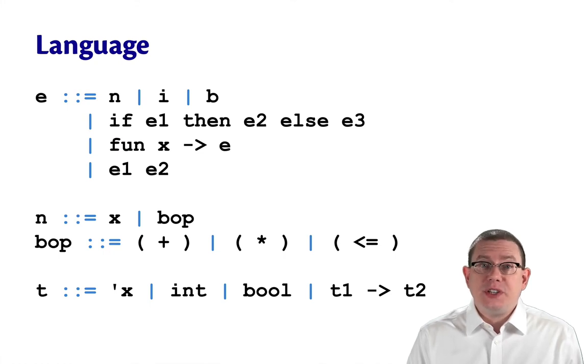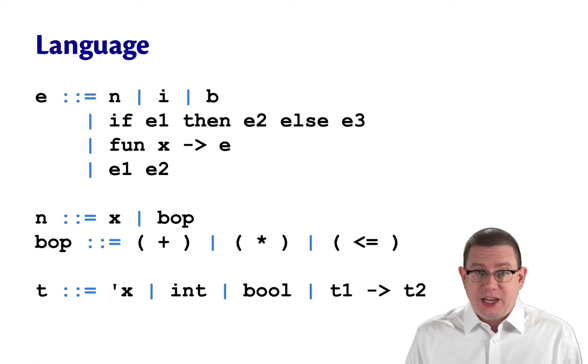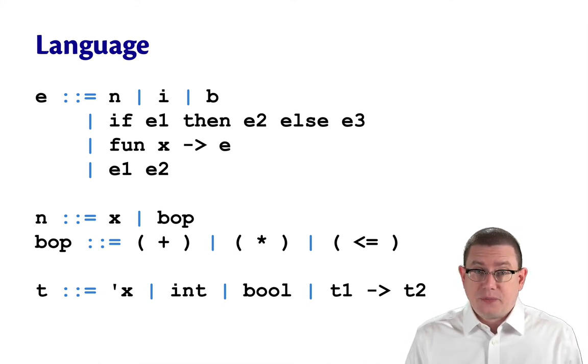Again, we're going to need a little language to demonstrate HM type inference for. Simple is actually too simple to use as an example language, because with simple, you can actually infer all the types without even needing to use something as fancy as HM type inference. You literally can just basically guess and check what the types have to be. So to do something a little more complicated, let's take simple and add the lambda calculus to it. Now, at the same time, I'm also going to remove let expressions from the language. It surprisingly turns out that they're the trickiest part of type inference. So we're going to leave those out for now and come back and add them in again to the end.